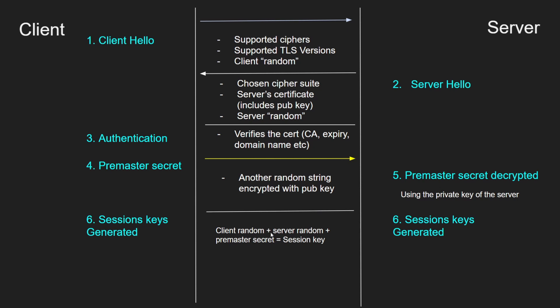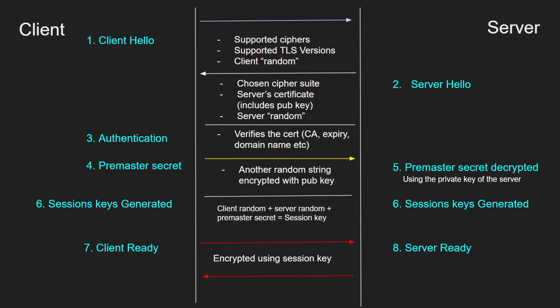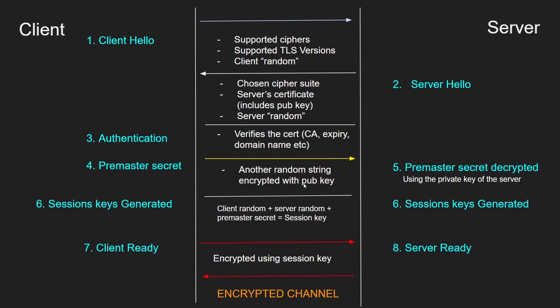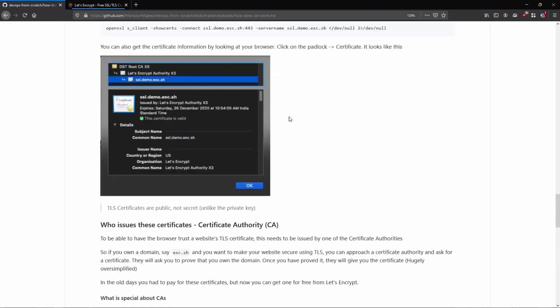The session keys are generated by combining the client random, the server random, and the premaster secret. The client random and server random were sent in plain text, but the premaster secret was encrypted with the server's public key — so only the client and server know it. The server decrypts the premaster secret using its private key. Once both sides have the session keys, the client sends an encrypted 'client ready' message, the server does the same, and from this point onward all communication uses symmetric key encryption with the session key. An eavesdropper has the client random and server random but not the premaster secret, so they cannot derive the session keys.